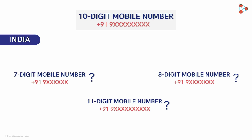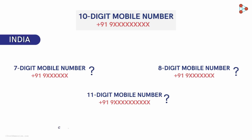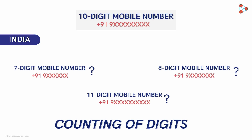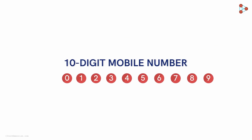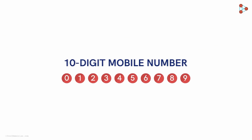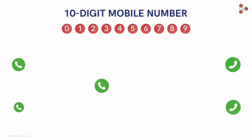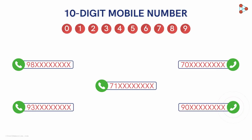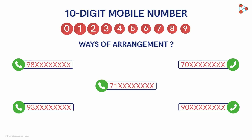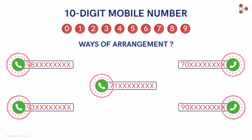The answer lies in simple math — that is, counting of digits. Here we have digits from 0 to 9. Using these digits, we have to form different mobile numbers, and each and every mobile number should be unique. So, in how many ways can we arrange these 10 digits to get our desired results?